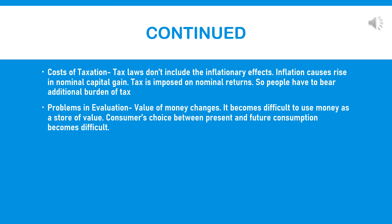There is also a problem from the consumer side. As inflation takes place, there is a change in the value of money, making the intertemporal choice of the consumer very tricky. It is very difficult for consumers to choose between present consumption and future consumption — between consumption and savings — because money is normally used as a store of value. But when there is frequent inflation, the real value of money is changing continuously, making it very difficult for consumers to make an appropriate choice between present and future consumption.